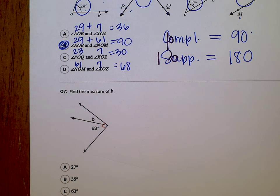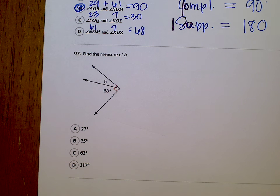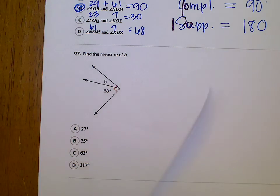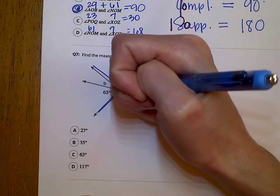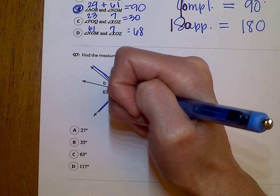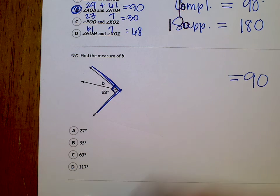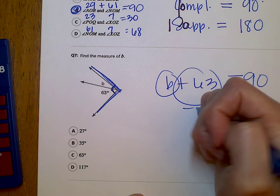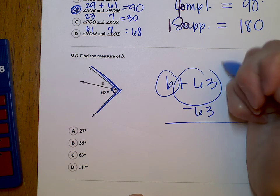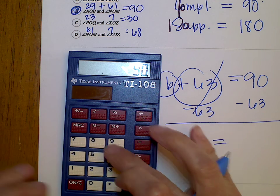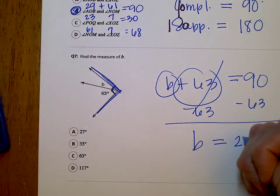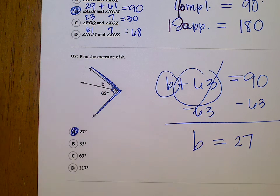Number 7: find the measure of B. This one's a little different — it does not add the two angles to equal 180. This is a complementary angle. I can see a square corner here, which is a 90 degree angle. If both angles are within that 90 degree angle, then they're going to add to equal 90. So B plus 63 equals 90 degrees. Circle your terms and subtract 63. B equals 90 minus 63, which is 27. So A is going to be the answer on that one.